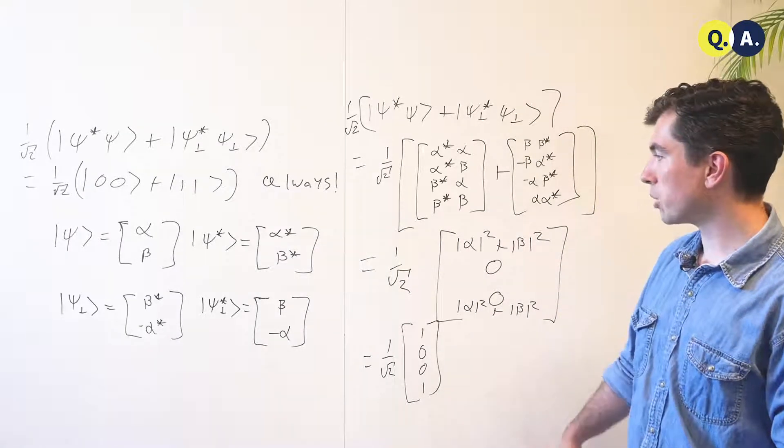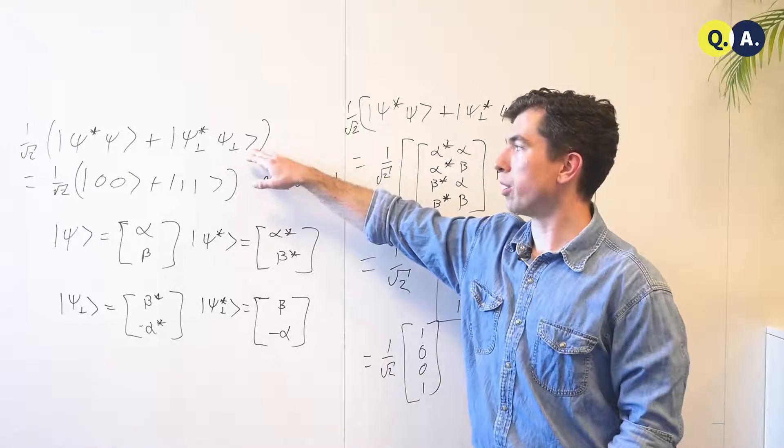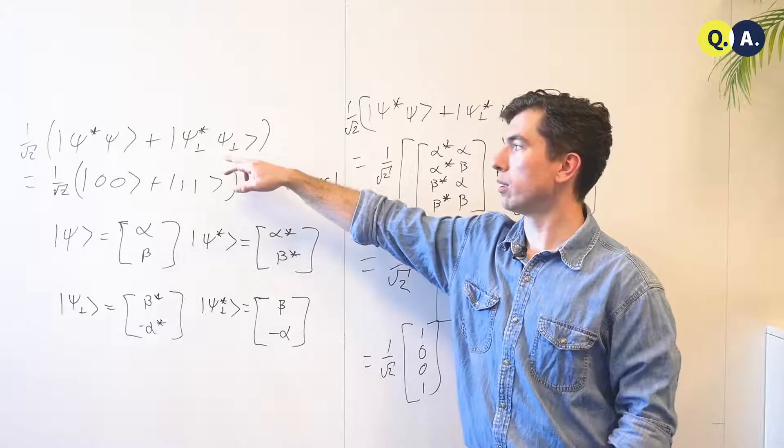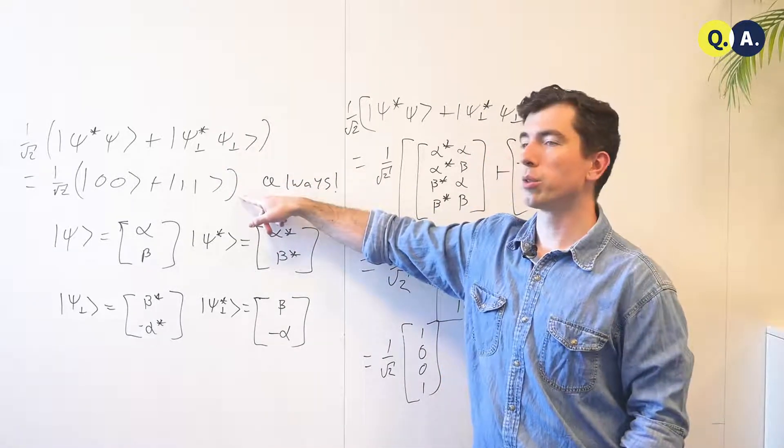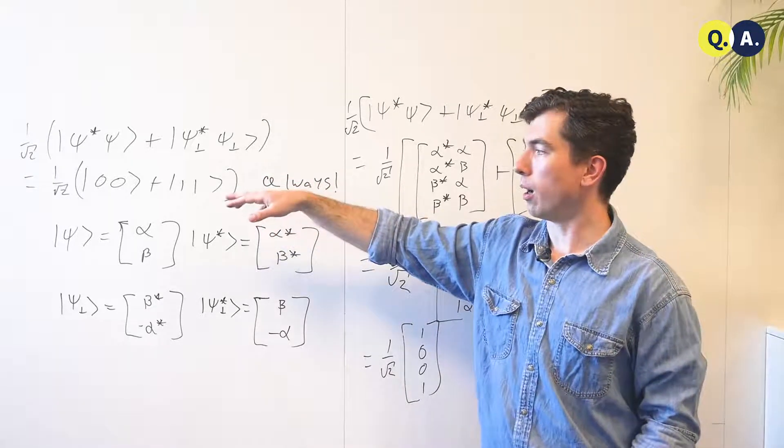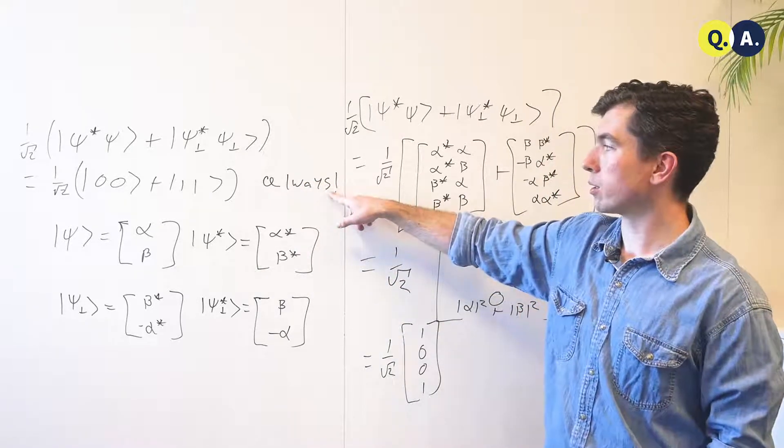Here we can see a not-too-bad example with two qubits. We're going to prove that for any maximally entangled state of the form psi star psi plus psi perp star psi perp, it's always equal to the bell state that's fully correlated that we know and love, 1 over root 2, 0, 0, plus 1, 1. And this is regardless of what psi is.